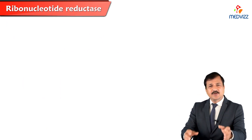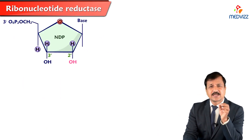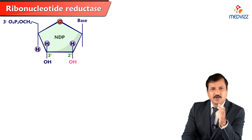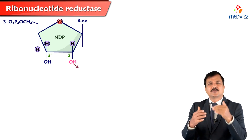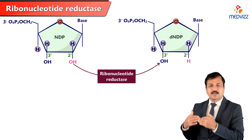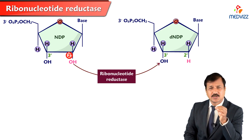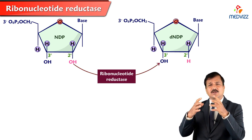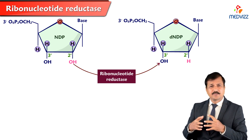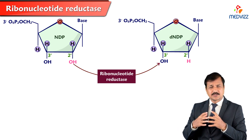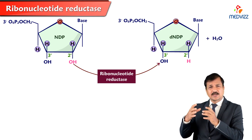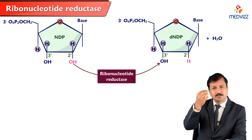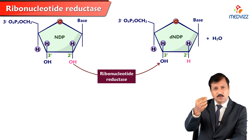This enzyme reduces the second carbon present in the ribose of nucleotide diphosphates and converts them into deoxyribonucleotide diphosphates. The second carbon in the ribosugar is reduced — meaning the hydroxyl group at the C2 prime carbon is removed. As seen in the reaction, a water molecule is released as the hydroxyl group is taken out.